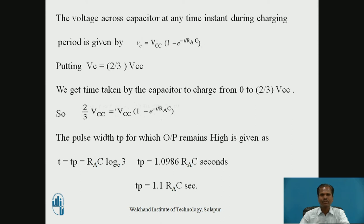Putting the voltage across capacitor equal to the target voltage two-thirds VCC, we get the time taken by the external timing capacitor to charge from 0 to two-thirds VCC. The pulse width Tp, for which the output of the monostable multivibrator remains high in the quasi-stable state, is given by: Tp = RA × C × ln(3). Therefore, Tp = 1.0986 × RA × C seconds, which is approximately Tp = 1.1 × RA × C seconds.